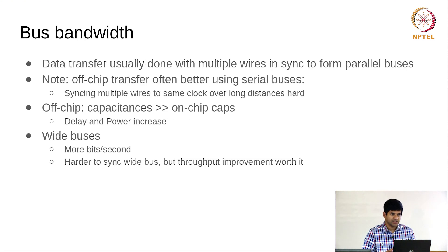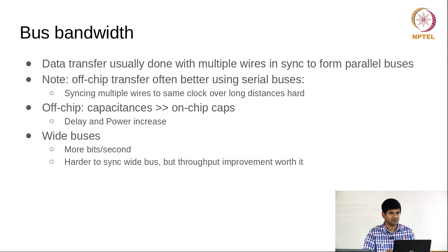Bus bandwidth refers to how much data can be transferred into or out of the system per unit time, and it is usually done with multiple wires synchronized together to form parallel buses. Off-chip transfer is often better done using serial buses — USB, the universal serial bus, is a good example, along with FireWire and Thunderbolt — all variants of how serial buses can reach much higher speeds than what you would typically find on parallel buses.